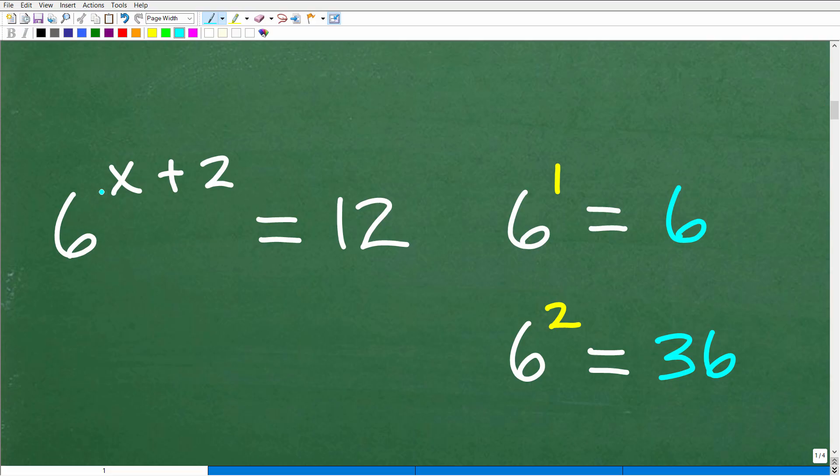Okay, so here we have 6 to the x plus 2. 6 to some power, right? This is some unknown value. So 6 to some unknown value is equal to 12. So we're going to take 6 and we're going to take it to some power, and that's going to be equal to 12.